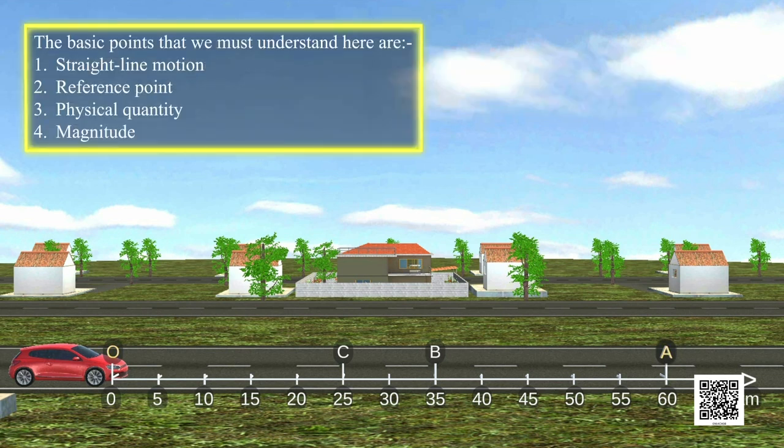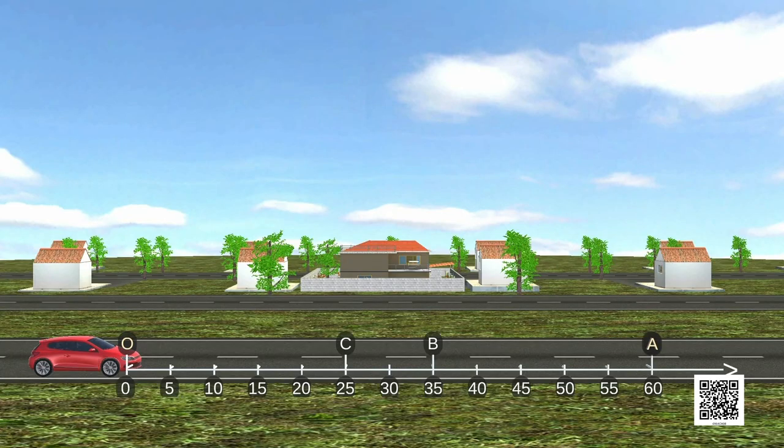The basic points that we must understand here are Straight Line Motion, Reference Point, Physical Quantity, and Magnitude. Let us see Straight Line Motion.